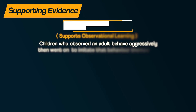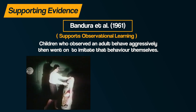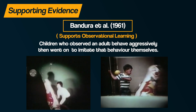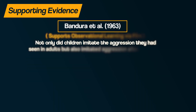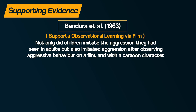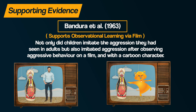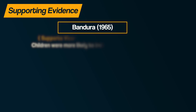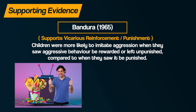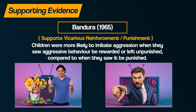Firstly, there is the supporting research by Albert Bandura with the Bobo Doll experiments. To summarize: Bandura in 1961 demonstrated how children who observed an adult behave aggressively went on to imitate that behaviour themselves. Bandura in 1963 found that children also imitated aggression after observing aggressive behaviour in a film and with a cartoon character. And Bandura in 1965 found that children were more likely to imitate aggression when they saw aggressive behaviour be rewarded or left unpunished compared to when they saw it be punished. All of these studies provide supporting evidence for how children can learn through observing others and the power of vicarious reinforcement.